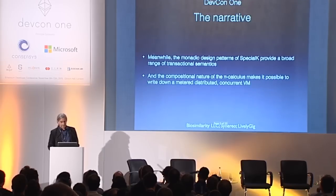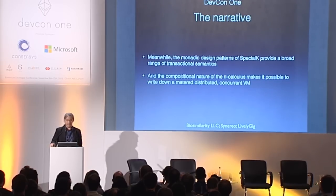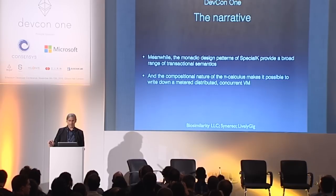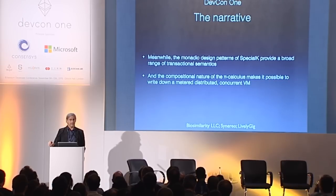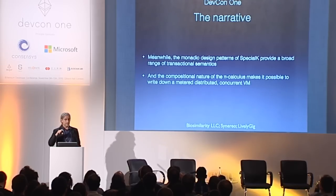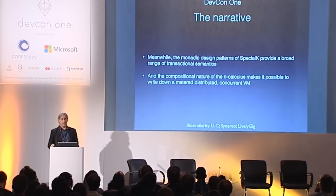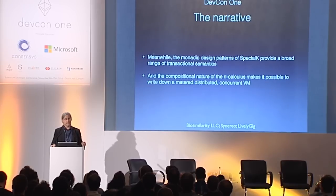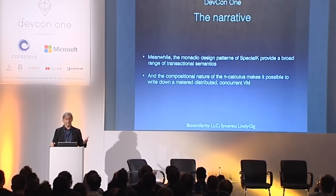In addition to these benefits, Special K already provides a broad range of transactional semantics. We get these because of the monadic decomposition of the elements used to make these kinds of transactions. There's basically a handful of programming paradigms used successfully today in building distributed systems, and it turns out you can organize all of those components under a single rubric — essentially a single API.